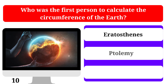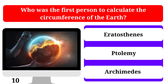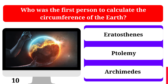Who was the first person to calculate the circumference of the Earth? Eratosthenes, Ptolemy, or Archimedes. The correct answer is Eratosthenes.